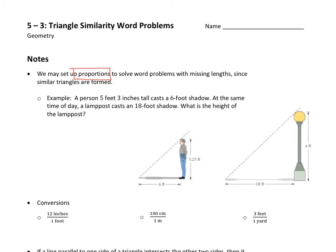So we've got this first example. It says a person 5 foot 3 inches tall casts a 6 foot shadow. At the same time of day, a lamppost casts an 18 foot shadow. What is the height of the lamppost? Because we're looking for the height of the lamppost, I'll call it X. You can see here that the picture was already drawn for us. Here we've got a person, 5.25 feet, 6 foot shadow. Picture of a lamppost, X feet, 18 foot shadow.